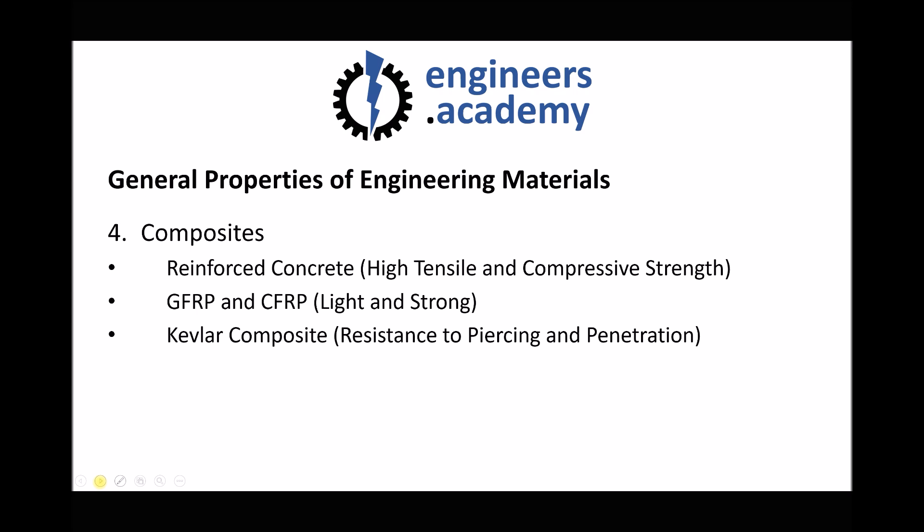The third example is Kevlar composite, used for body armour and armoured vehicles. It's very light, very strong, and resistant to piercing and penetration, largely because the Kevlar fibres are very hard and difficult to cut. In a Kevlar composite, the Kevlar — a synthetic material — is woven to produce a mesh and then encased in a polymer, providing a material that's highly resistant to knife attacks, bullets, and other projectiles.